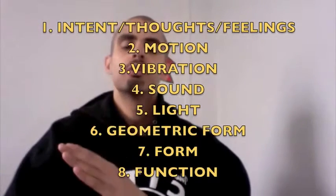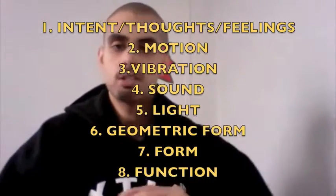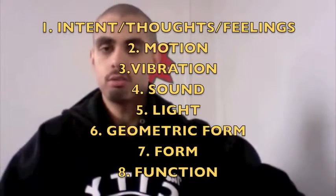It goes: motion, vibration, sound — light, then geometric form, then form, then function. These are the levels of manifestation. Something starts as energy in motion, has a vibration, has a sound related to that vibration, has a color or light frequency associated with it, has a geometric form, and then a physical form.